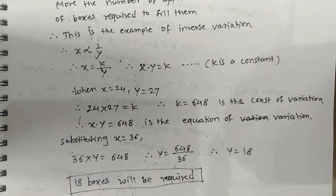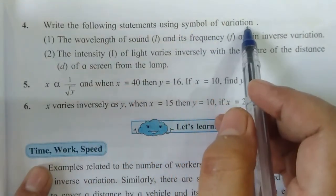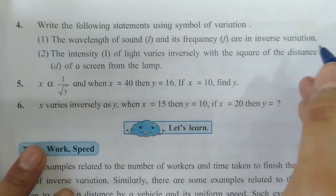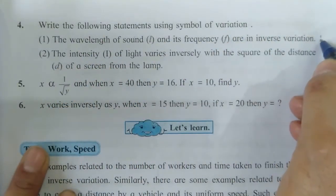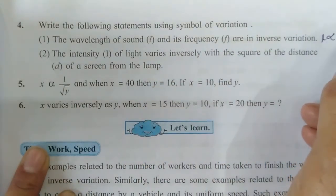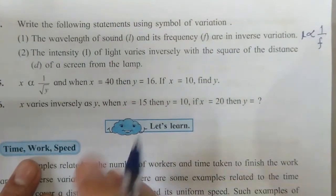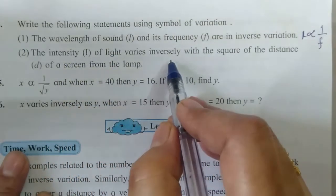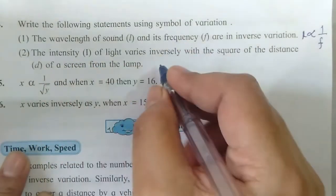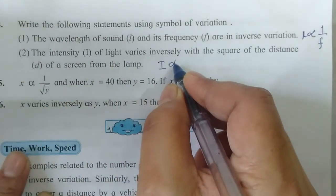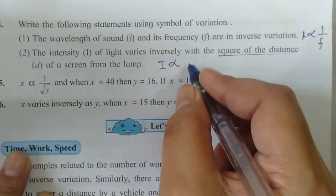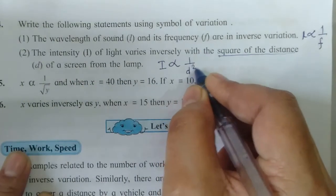Question 4: Write the following statements using the symbol of variation. First: the wavelength of sound L and its frequency F are in inverse variation. So L inversely varies as F, written as L ∝ 1/F. Second: the intensity I of light varies inversely with the square of distance d from the lamp. So I ∝ 1/d².